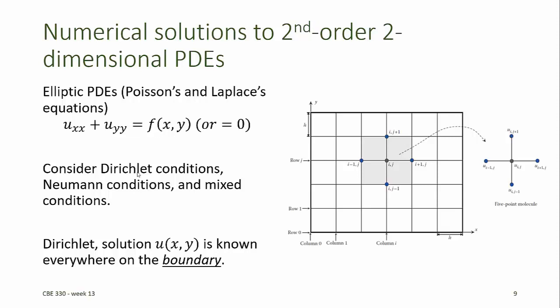We'll consider Dirichlet conditions, Neumann conditions, and mixed boundary conditions. For the Dirichlet conditions, the value of the dependent variable u is known at every point on the boundary of the domain.